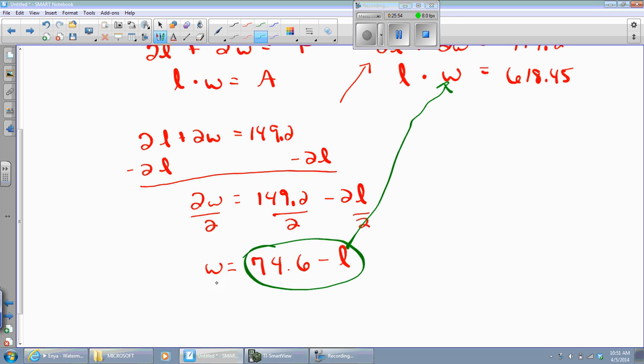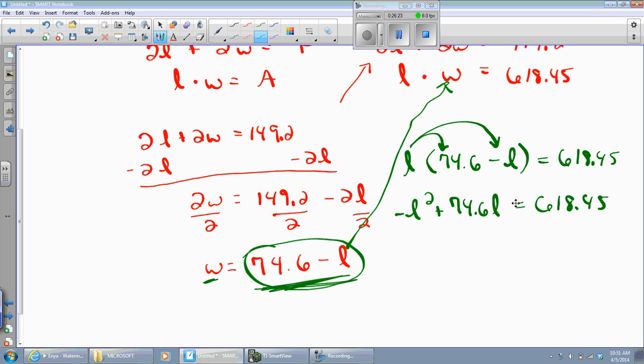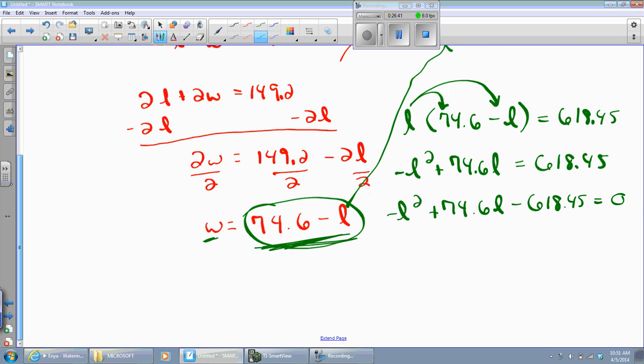Now I take this value here and put it into this equation for W. Why can I do that? Because it says W equals that. So I can substitute it in its place. I'll do L times the quantity of 74.6 minus L, and that will equal 618.45. I'll distribute and get negative L squared plus 74.6L equals 618.45. Negative L squared plus 74.6L minus 618 equals 0. Why did I do that? Well, it's a quadratic, and I want to use the quadratic formula on it, and we need it equal to 0.